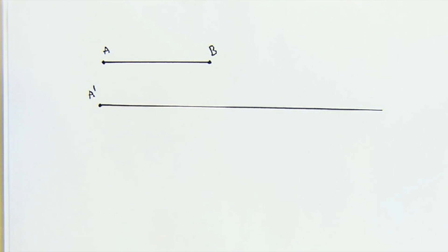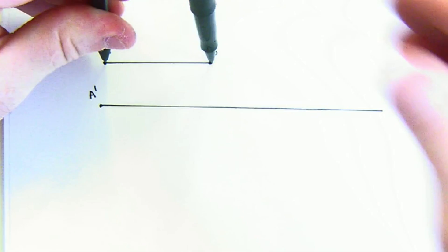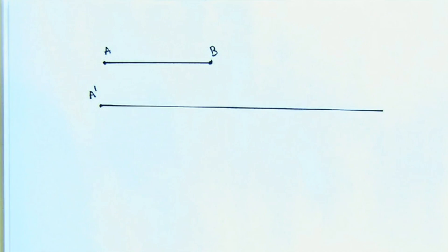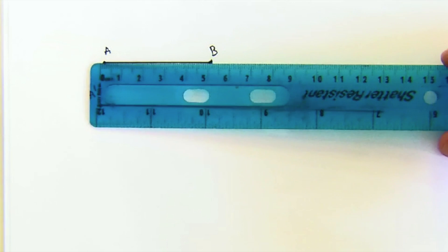We take our compass and we measure AB. Now that's a new term for you. Normally if you say measure AB, students are going to pull out their ruler and say it's about 5.2.